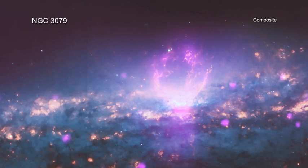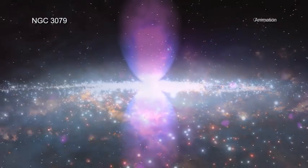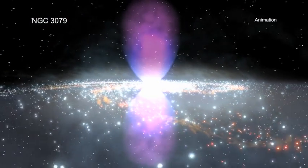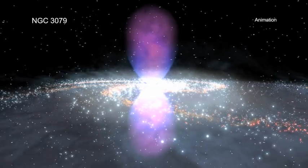NGC 3079 super bubbles are younger cousins of the Fermi bubbles, first located in the Milky Way galaxy in 2010.